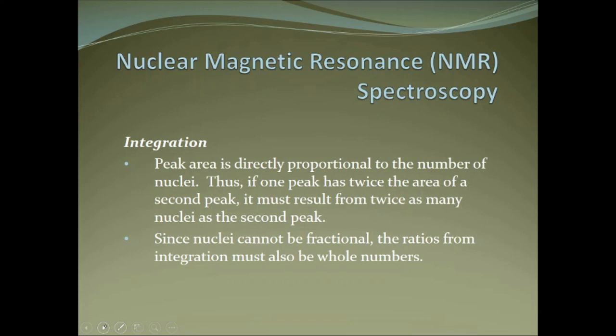The second factor is integration. The peak area — not just the height, but the full area — is directly proportional to the number of nuclei. Unlike IR where peak size was more proportional to bond polarity, here it is quantitative. If one peak has twice the area of a second peak, it has twice as many hydrogens. Since you cannot have fractional nuclei, these ratios must be whole numbers. The peak area gives us the relative number of hydrogens.